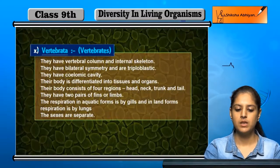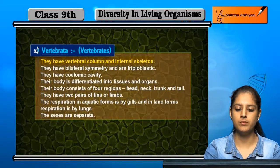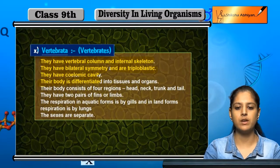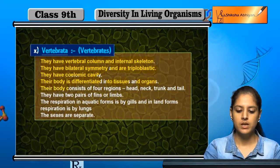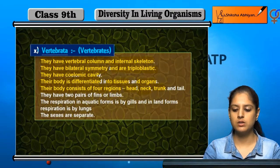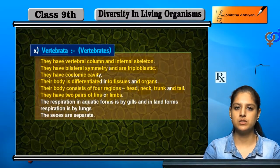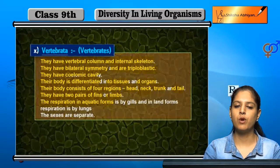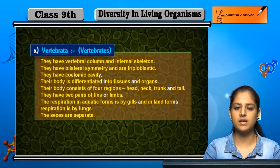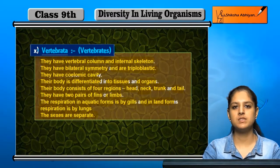The last is Vertebrata, which we call vertebrates. They have a vertebral column and internal skeleton, bilateral symmetry, and are triploblastic with a coelomic cavity. They have tissues and organs. Their body has four regions: head, neck, trunk, and tail. They have two pairs of fins or limbs. Aquatic forms respire through gills and land animals through lungs. Males and females are different sexes. This covers all 10 types of groups in the Kingdom Animalia.